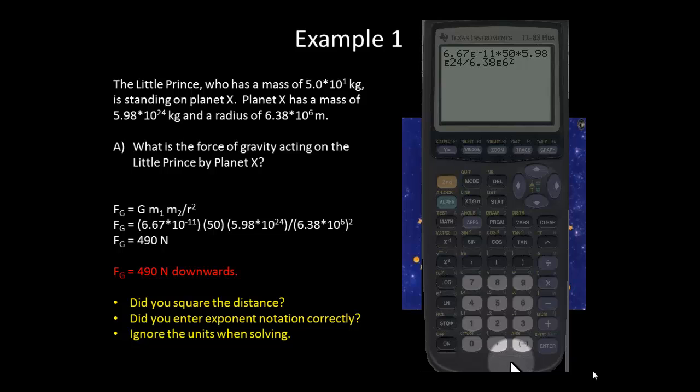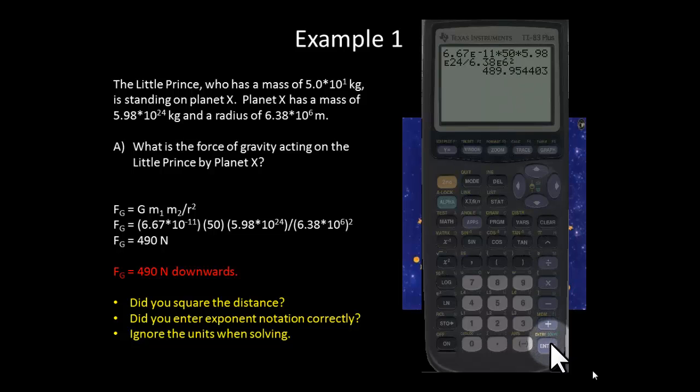Notice that this makes it really simple because I don't have to worry about any sort of parentheses. When I use the scientific notation format, it considers this entire number to be one thing. So, when I go to square it, it's going to square that entire number. So, I hit enter, and I do indeed get rounded to 490 newtons.